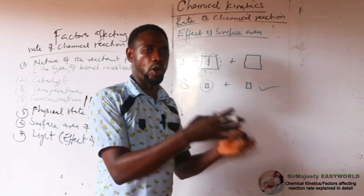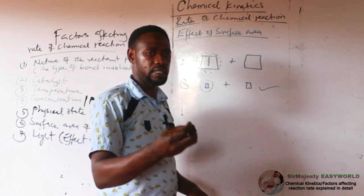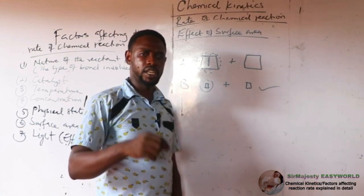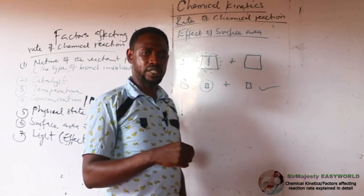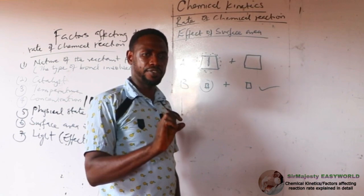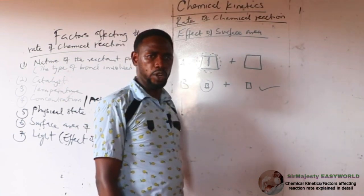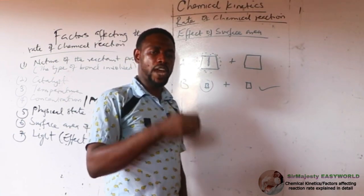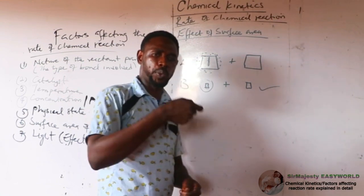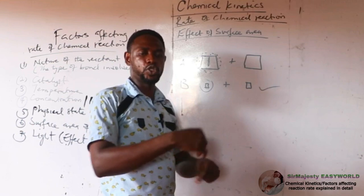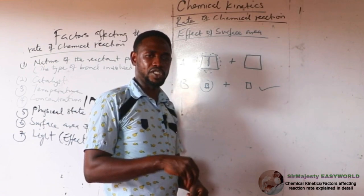In biology, chewing is a mechanism of increasing surface area. When you chew yam, you are exposing more starch molecules to the enzyme amylase in the saliva, making digestion faster. Grinding anything increases the surface area. In pyrotechnics and explosives, the finer and smaller-sized particles of aluminum powder mixed with oxidizing agents, the faster the burning.